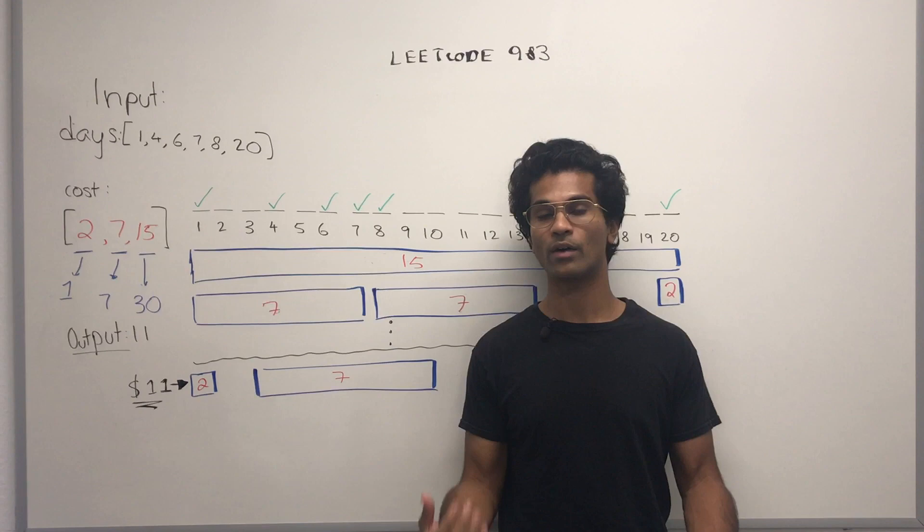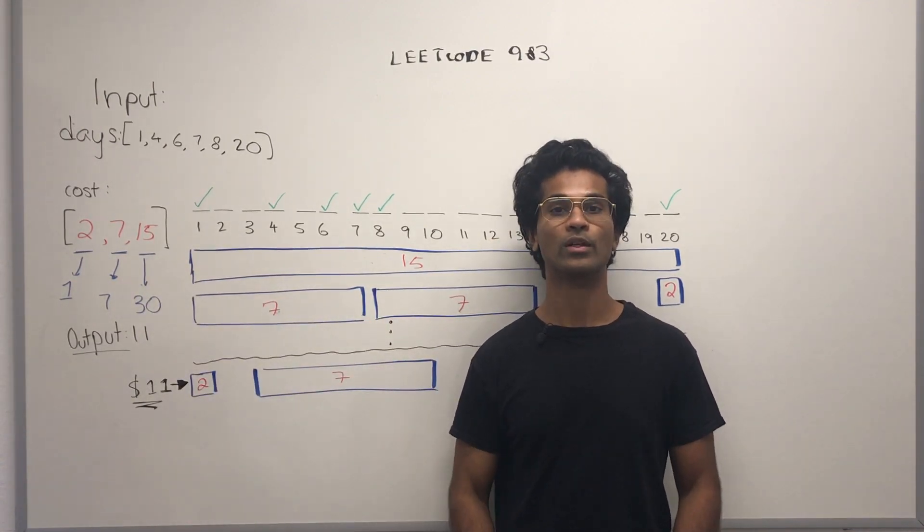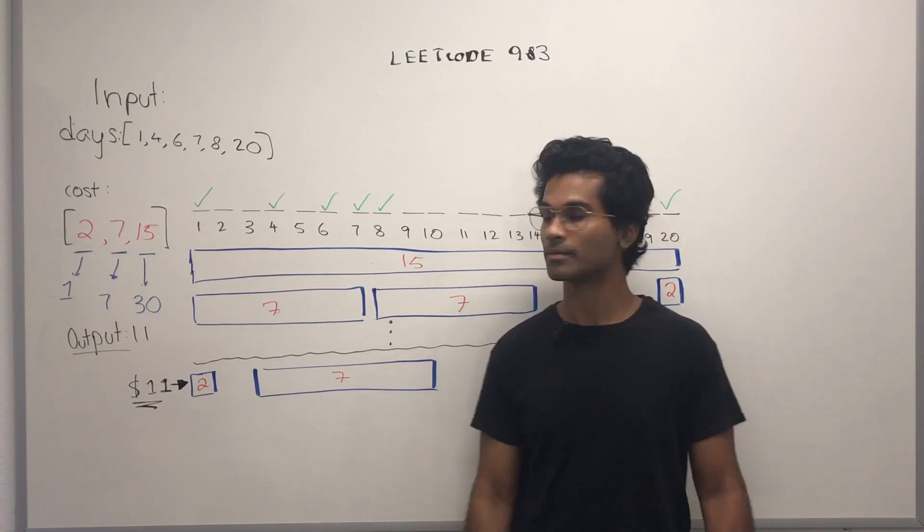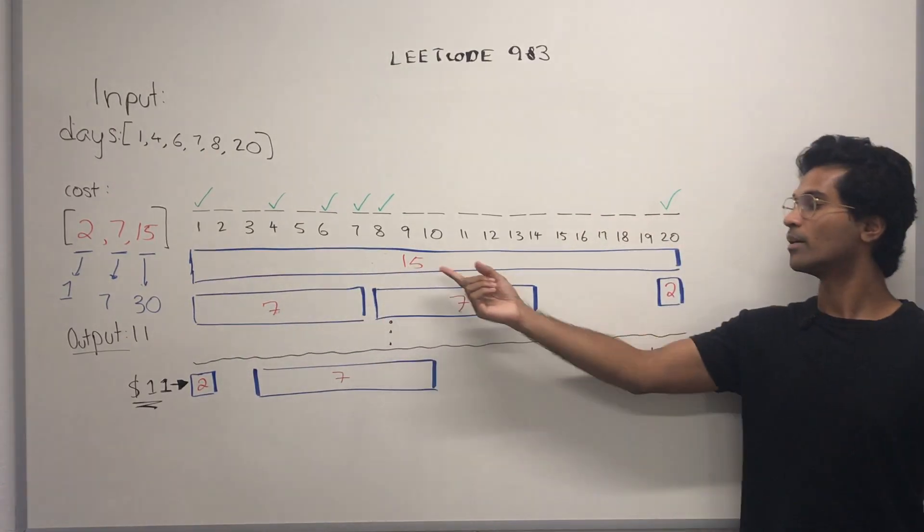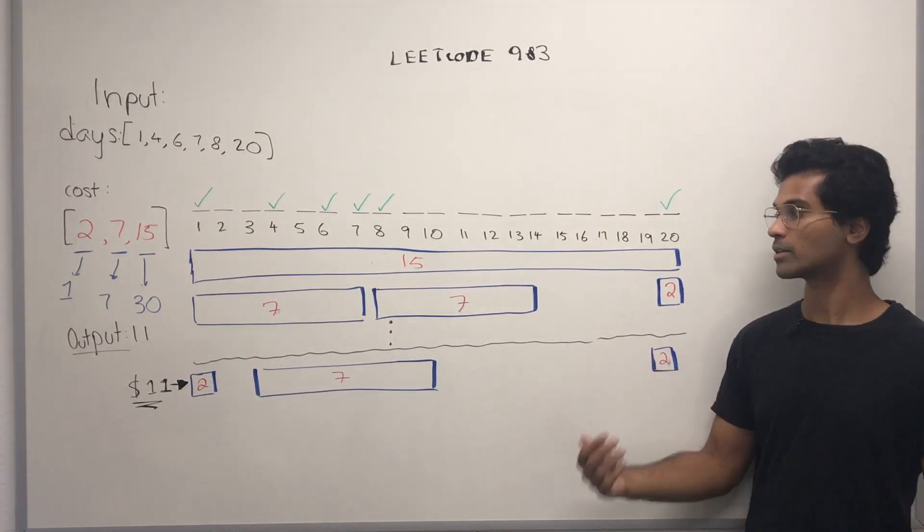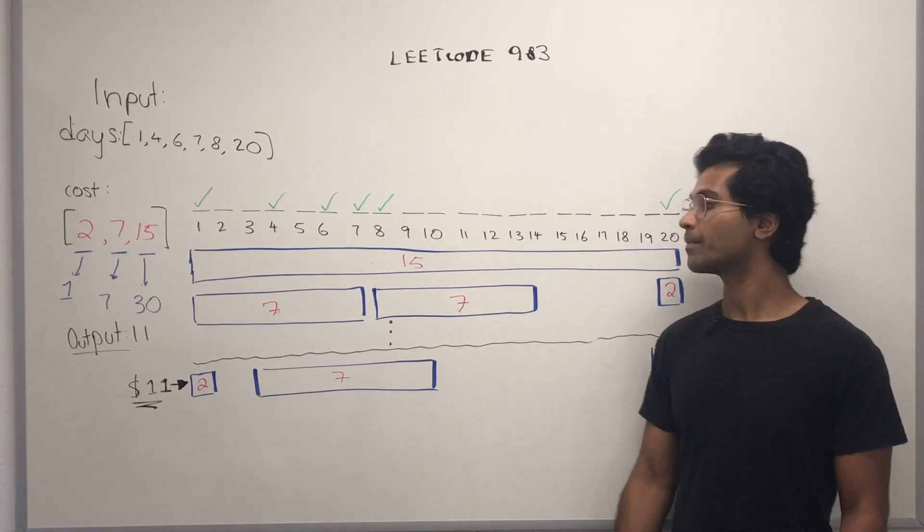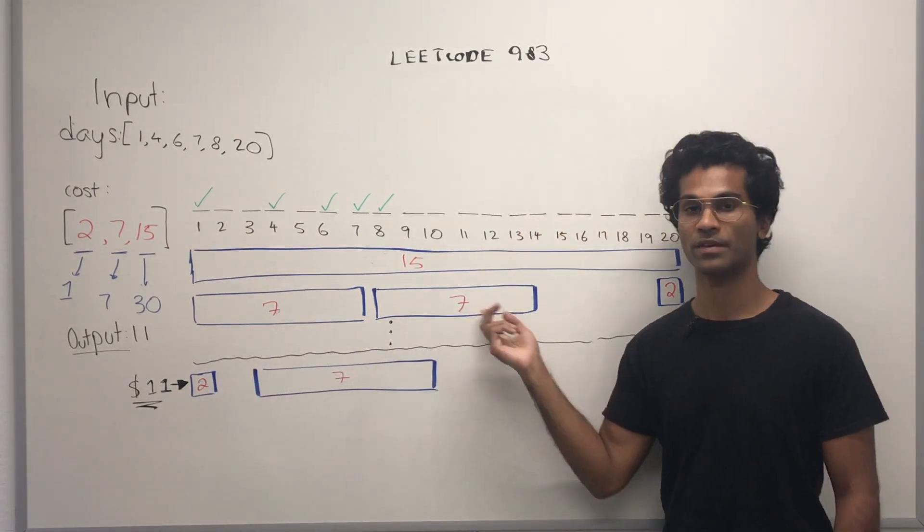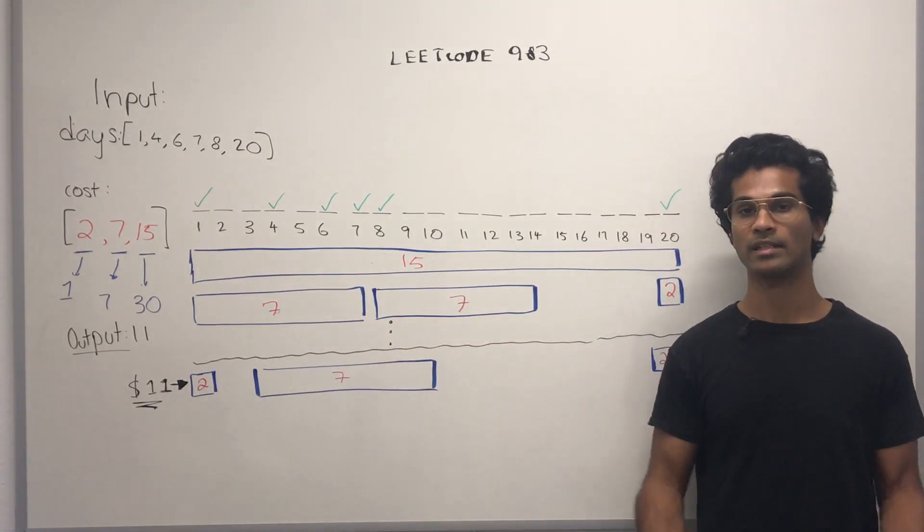We can travel using any combination of the passes, but we want to minimize the cost. Let's look at a couple possible ways. What if a 30-day pass, how much does a 30-day pass cost? It costs $15. Let's try a seven-day pass for the first seven days, and then another seven-day pass, and then a one-day pass. This approach is going to cost us $16.